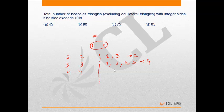When equal sides are 4, there will be 6 such triangles as there are 6 possible values for the unequal side, and these are 1, 2, 3, 5, 6, and 7.